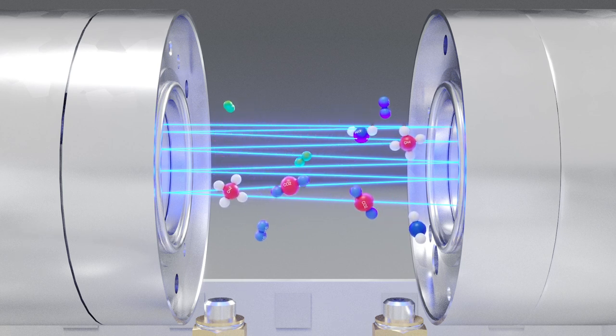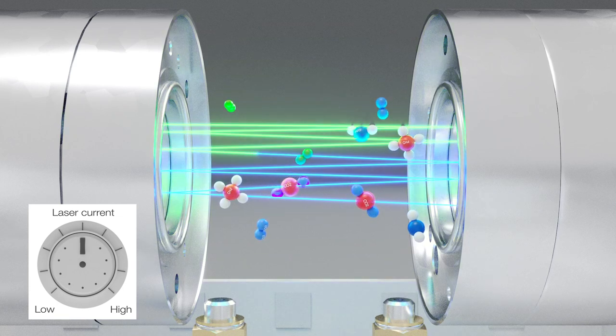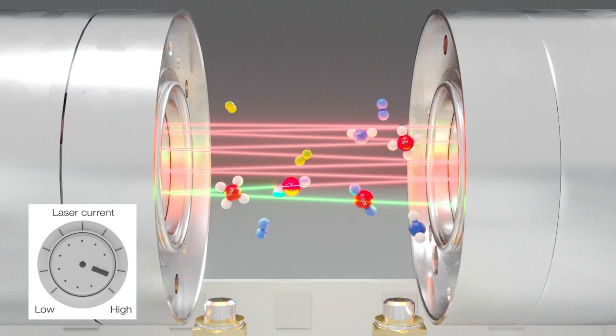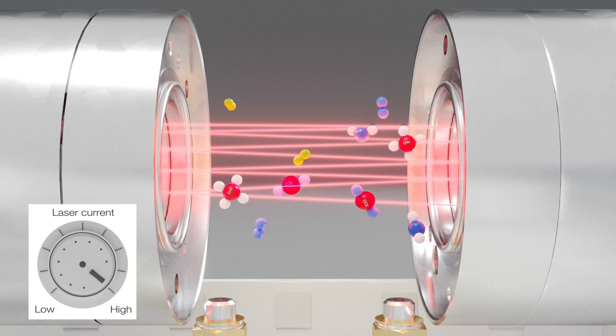In breath analysis, for example, CO2 and CH4 are relevant gases whose spectra partly overlap. Thanks to the narrow laser beam, these gases can be measured simultaneously without interference or cross-sensitivity.